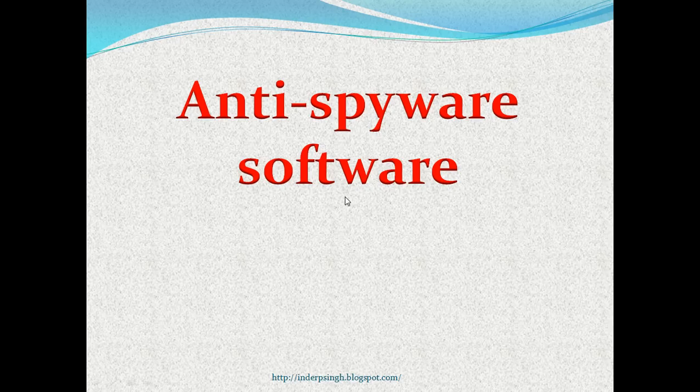Antispyware software. This software searches and removes spyware. Spyware is software that collects information from a system and sends it to its own server. Spyware typically works silently without harming the system resources. Antispyware software needs the latest engine and antispyware definitions to provide contemporary protection to the system.